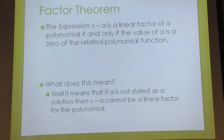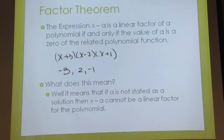Factor theorem is the next thing. The expression x minus a is a linear factor of a polynomial if and only if the value of a is a zero of the related polynomial function. In other words, if we were given x plus three times x minus two times x plus one, the zeros in this case are negative three, two, and negative one. So, they are interrelated. If the zeros are told to be of one polynomial, then you can write the linear factors to go with those zeros. And if you have the linear factors and they're told that they are part of a single polynomial, then you can solve them for the zeros.